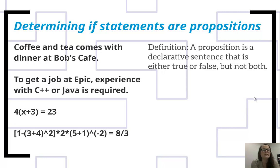We have two things to check. We need to make sure that it's a declarative sentence and we need to make sure that we can tell if it's true or false. We need to look at the statement and say it's either true or it's always false, one or the other. Coffee and tea comes with dinner at Bob's Cafe. If we go to Bob's Cafe and we order dinner and we get coffee and tea, then we know that's true. But if we don't get coffee and tea, then we know that's false. Again, these examples are kind of silly, but hopefully you get the idea of those two ideas. It's a declarative sentence and it's either true or false.